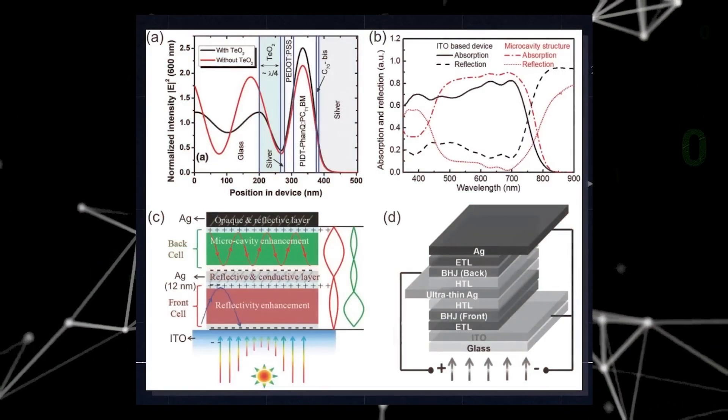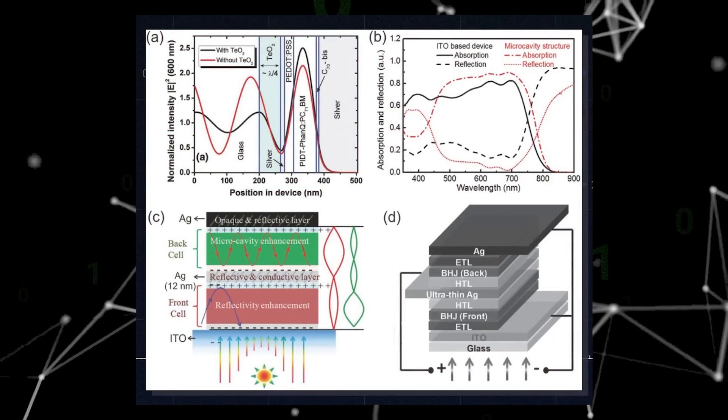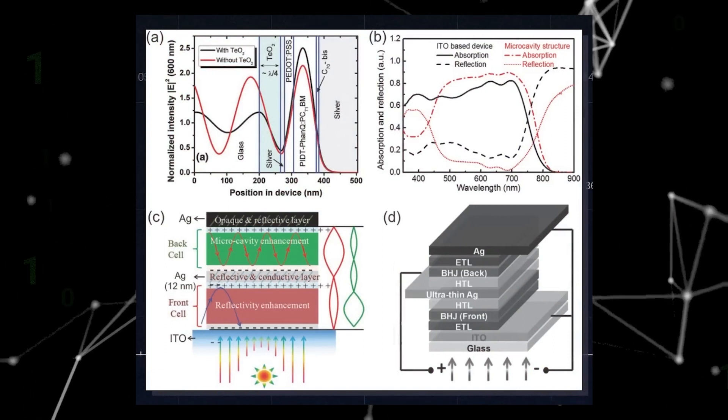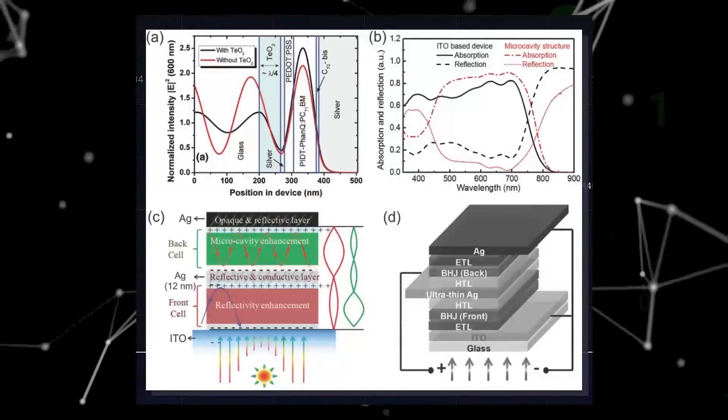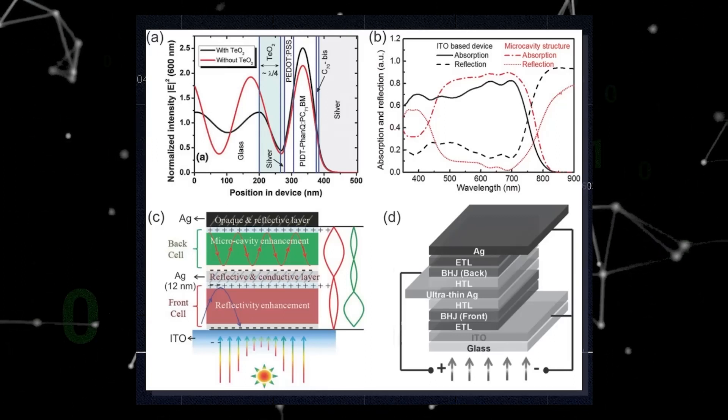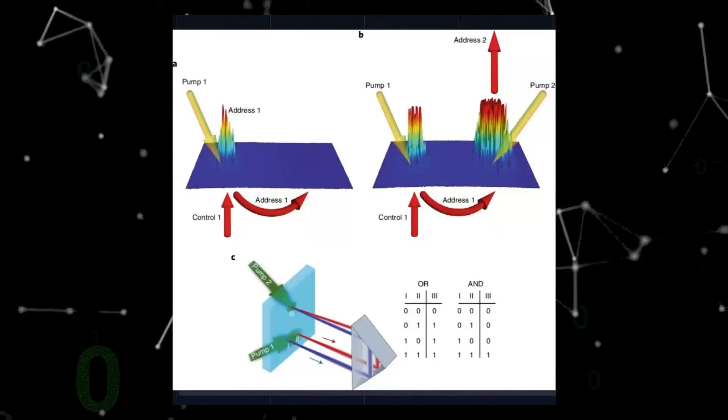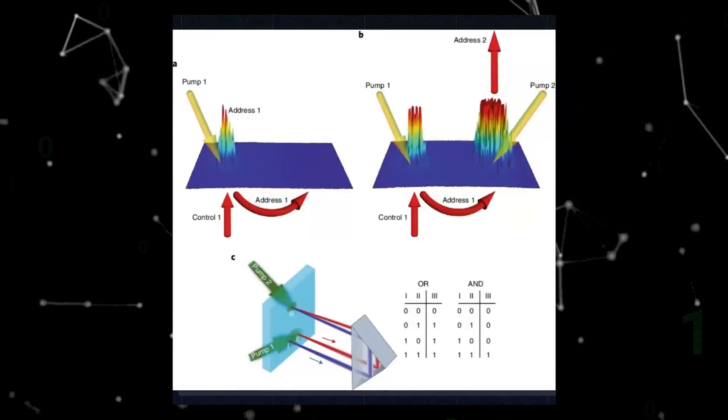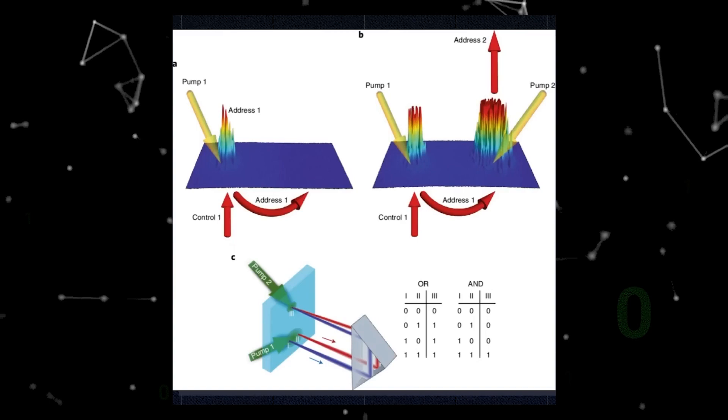The switching happens in a tiny space called a microcavity, which is made up of two highly reflected inorganic structures on either side of a 35 nanometer thick organic semiconducting polymer. It is designed in a manner to promote interaction with the material of the cavity by trapping incoming light within for as long as feasible.